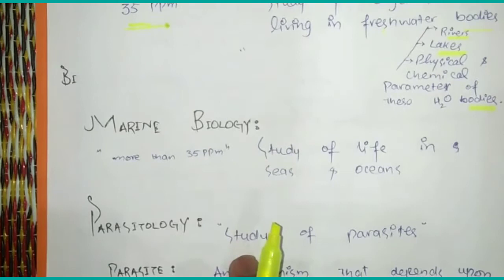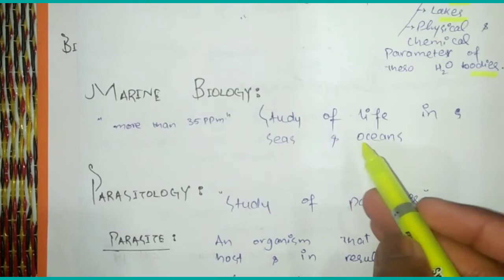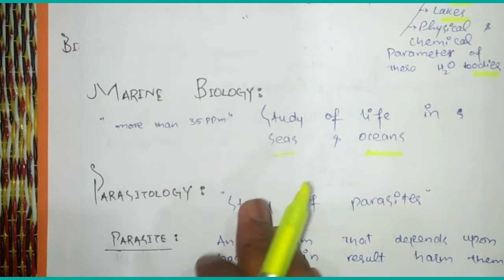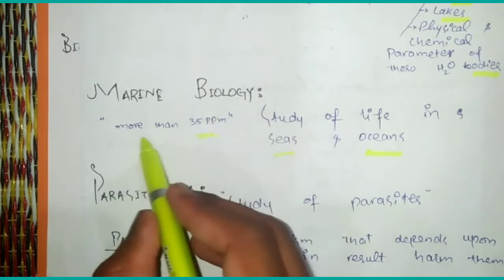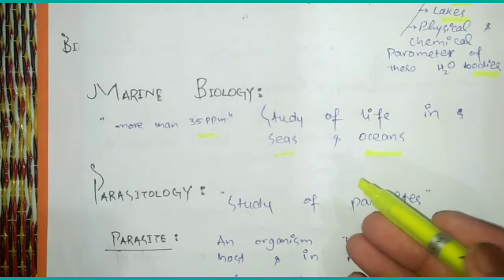Marine biology is the study of life in seas and oceans — the study of organisms which live in seas and oceans. Marine water has a ppm value of more than 35, and marine biology covers all organisms living in marine environments.